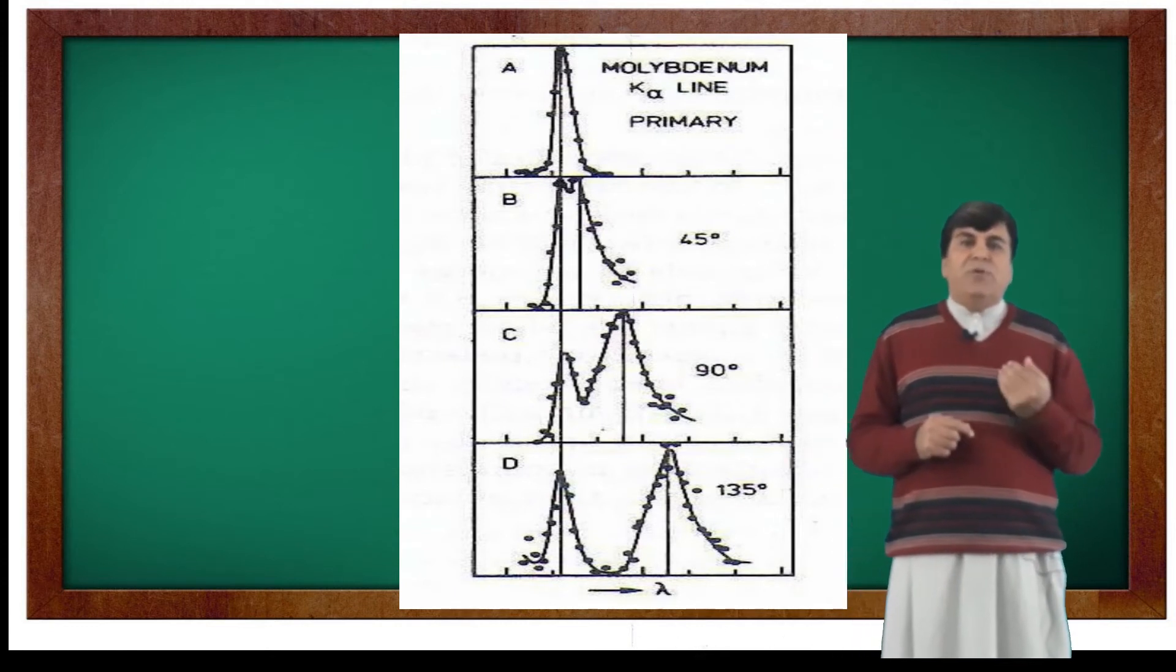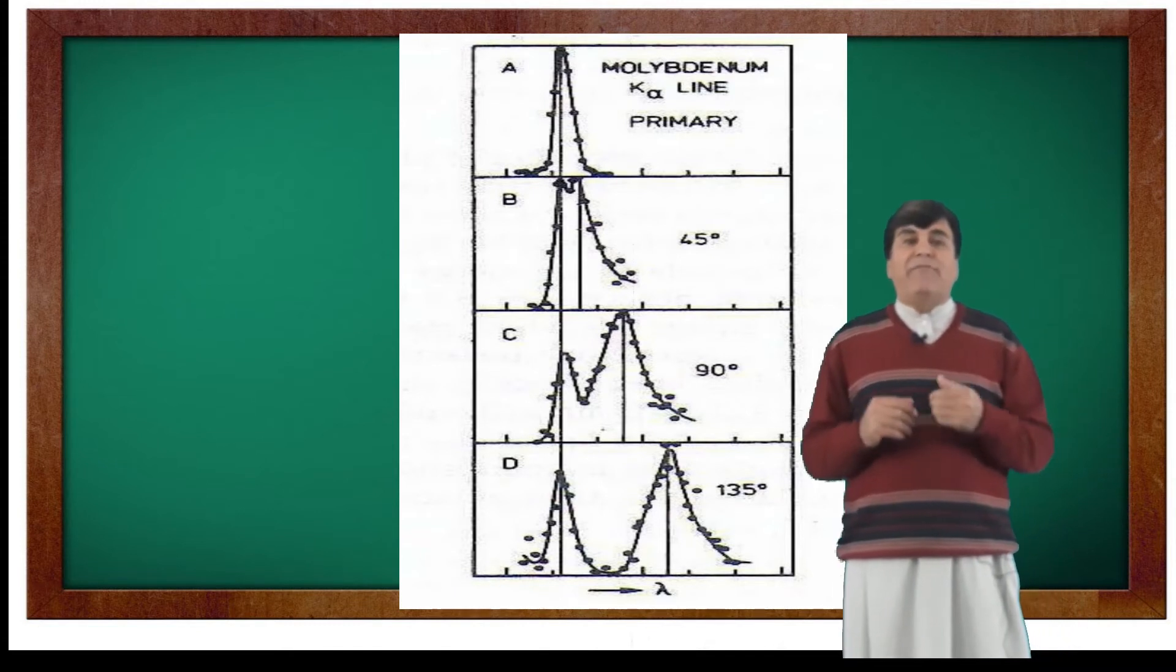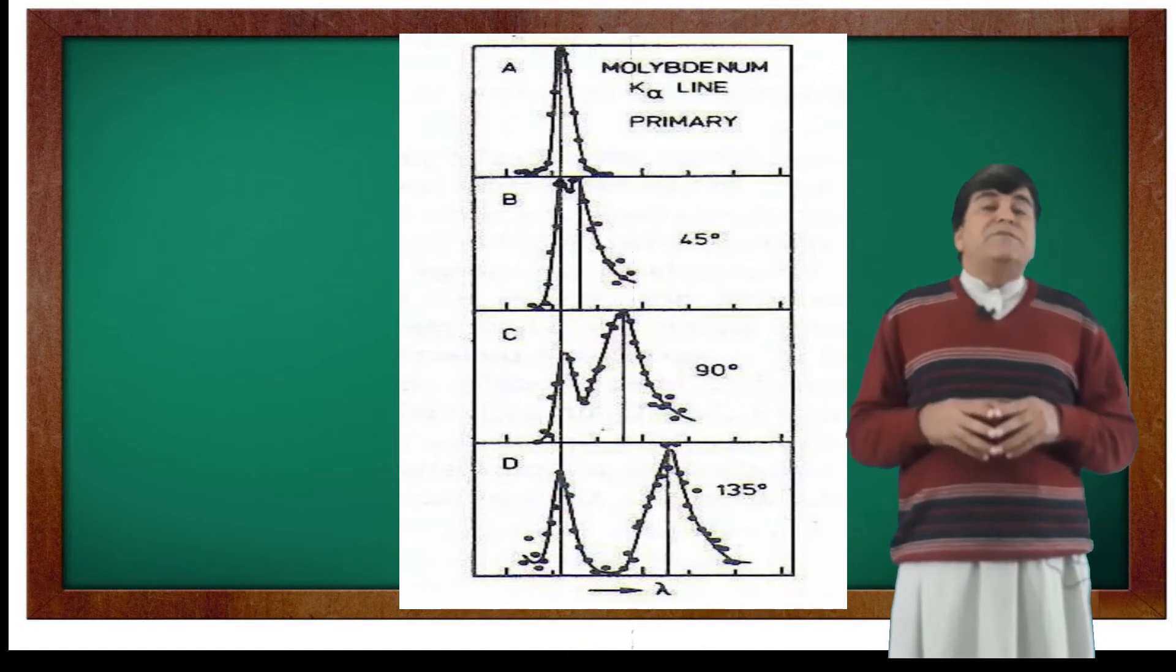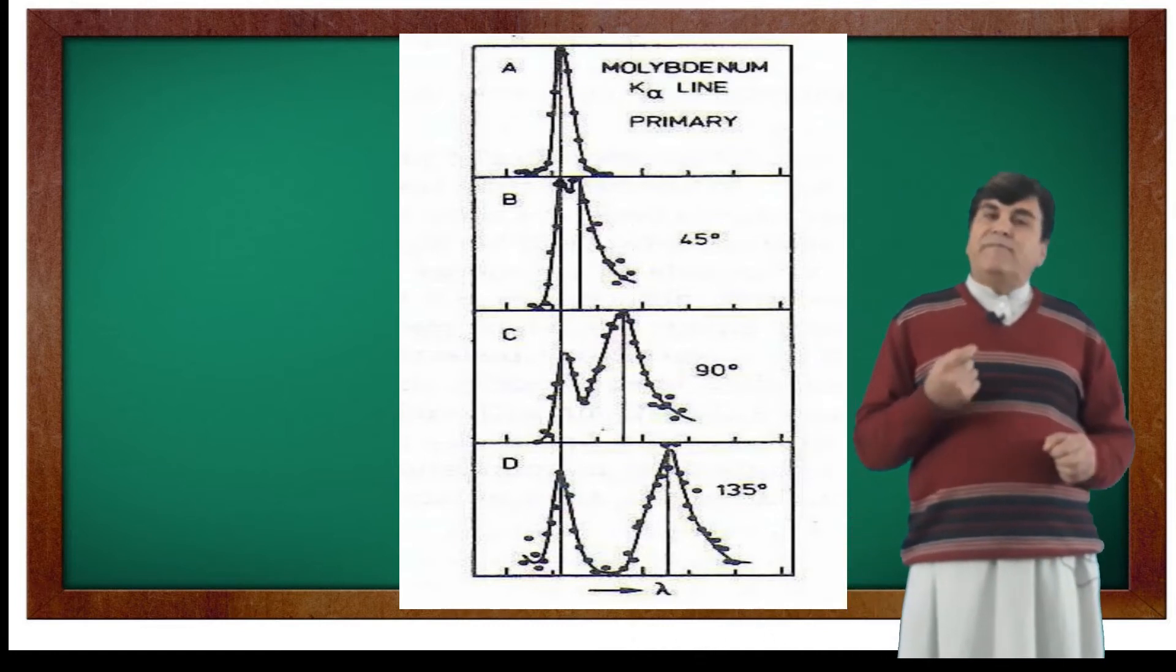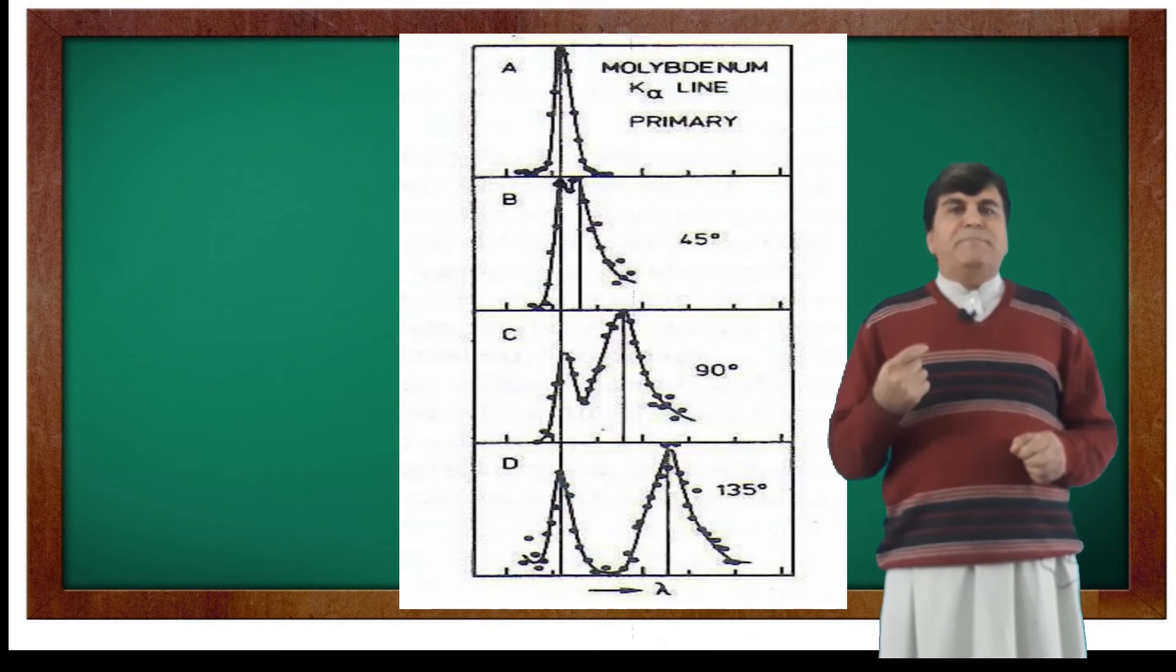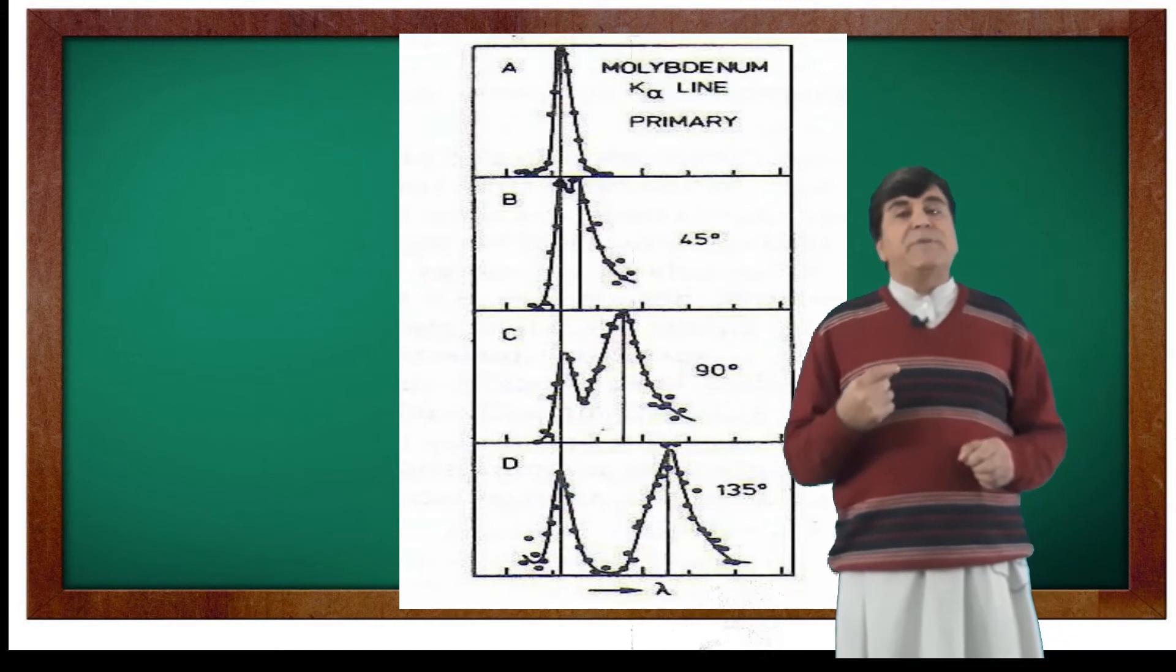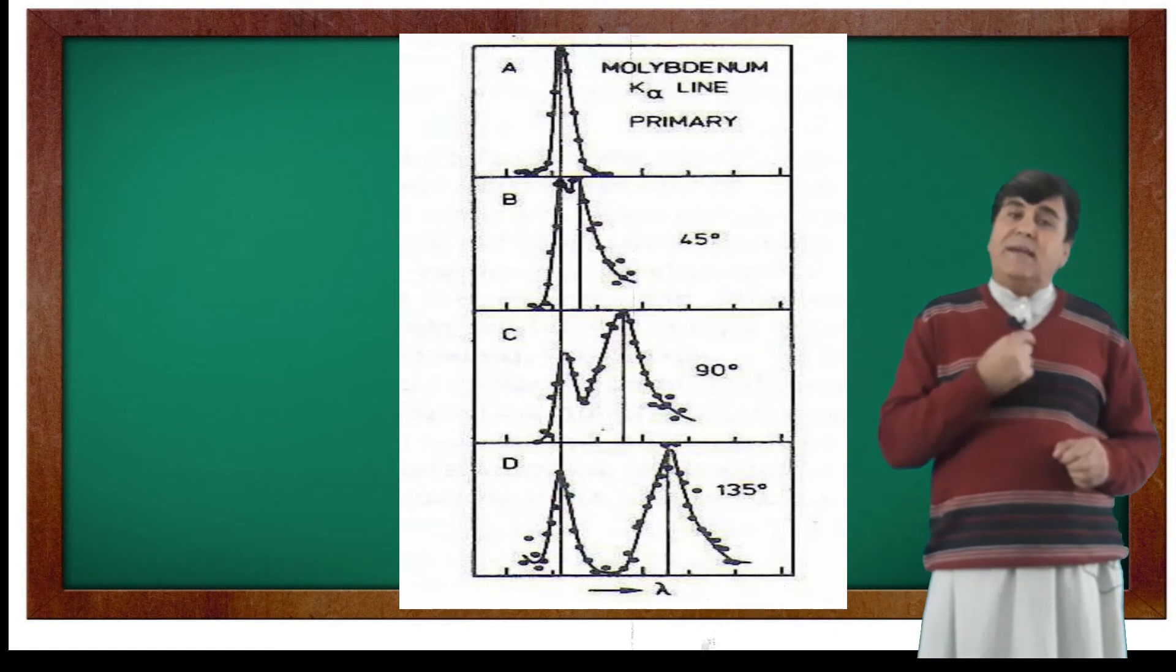Let us now talk about what was so astonishing regarding the existence of intensities at two different wavelengths in the scattered beam. The presence of radiation of wavelength lambda in the intensity profile of scattered beam is normal, but the presence of radiation of longer wavelength in the scattered beam cannot be explained on the basis of classical electromagnetic theory.